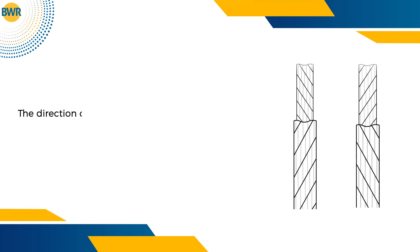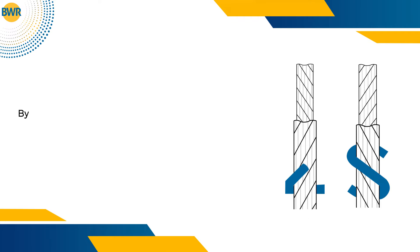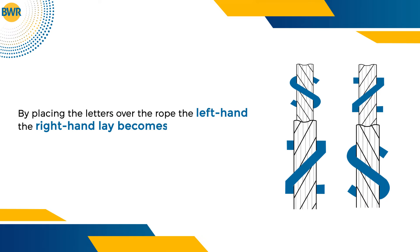The direction of rope lay is also referred to using the letters S and Z. By placing the letters over the rope, the left-hand lay becomes S and the right-hand lay becomes Z.